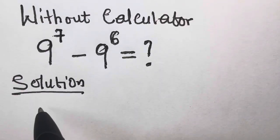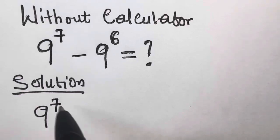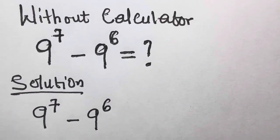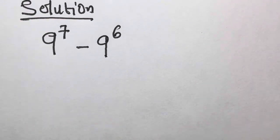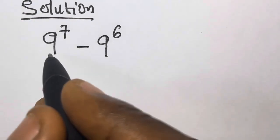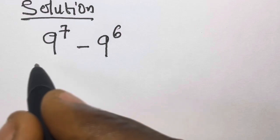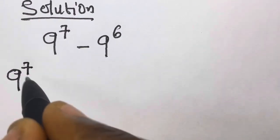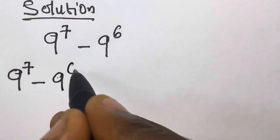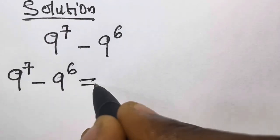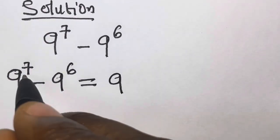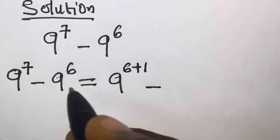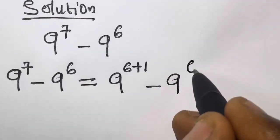We have 9 raised to the power 7 minus 9 raised to the power 6. From here, we know that we can further split this such that we have 9 raised to the power 7 minus 9 raised to the power 6 equals 9 raised to the power — we can express 7 as 6 plus 1 — then minus 9 raised to the power 6.